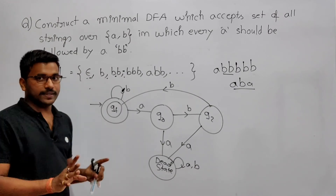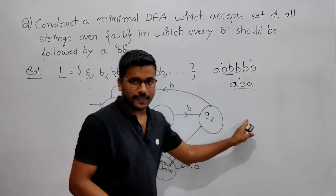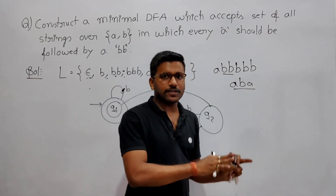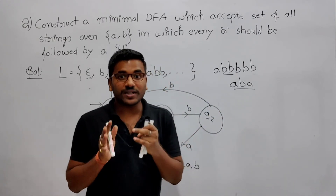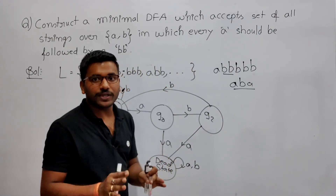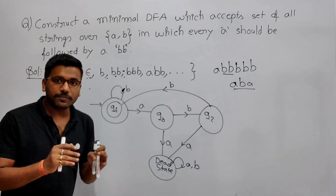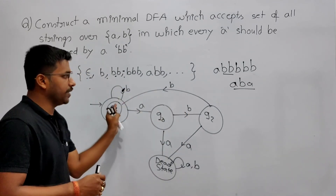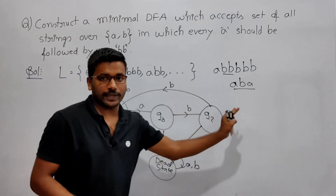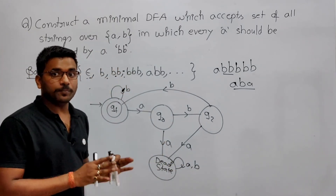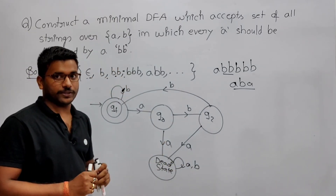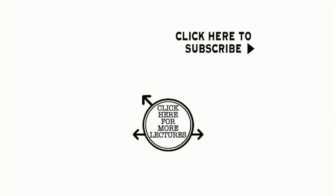Only one thing — if you are doing it such that by getting A you are going to a new separate state instead, then also it will be a correct DFA. But we are constructing a minimal DFA. In the GATE exam it will every time ask for minimal DFA. So that's why you should come here — no need to create a new state. It will be a correct DFA, but it will not be a minimal DFA.